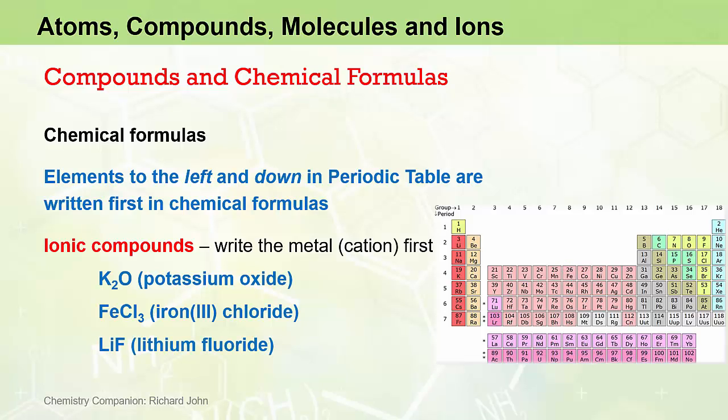LiF is the chemical formula for the ionic compound lithium fluoride. Lithium sits way over on the left of the periodic table, and fluorine sits way over on the right-hand side of the periodic table. So lithium is written first in both the name and the chemical formula.